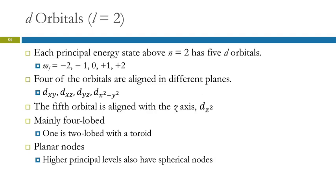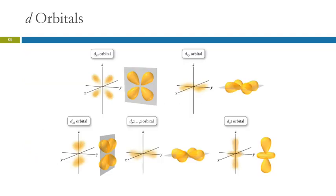Four of those are aligned in different planes, and the fifth is aligned along the z-axis. Most of these are four-lobed things. The p orbitals were two-lobed, but then one of them is really weird-looking. It's a two-lobed orbital with a toroid around it. And these have planar nodes. Then the higher ones also have spherical nodes. There they are.